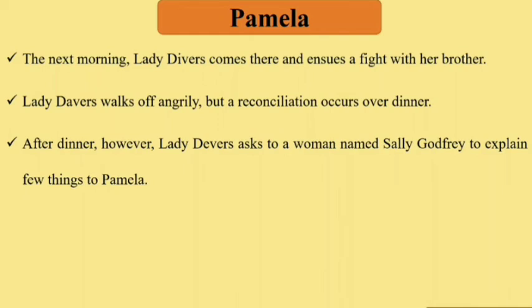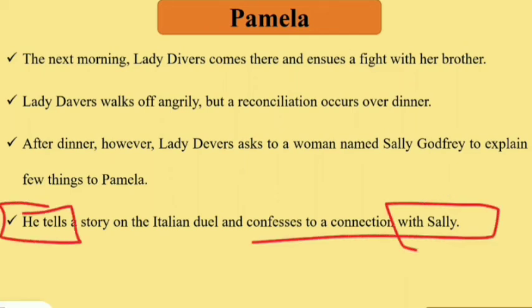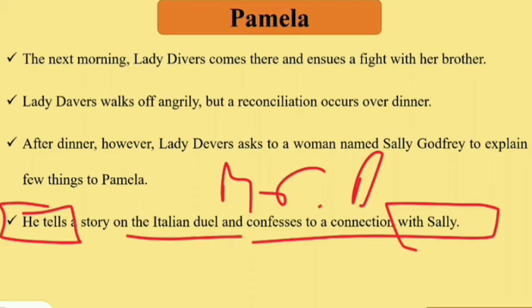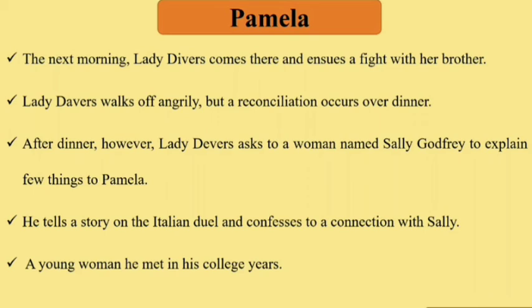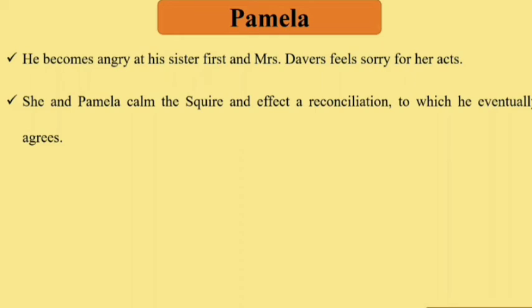Lady Devers walks off angrily but a reconciliation occurs over dinner. After dinner, Lady Devers asks about a woman named Sally Godfrey to explain a few things to Pamela. Mr. B tells the story about Sally Godfrey — a young woman he met in his college years — and confesses his connection with her. Lady Devers feels sorry. Pamela and Mrs. Devers together approach Mr. B and effect a reconciliation, which he eventually agrees to.